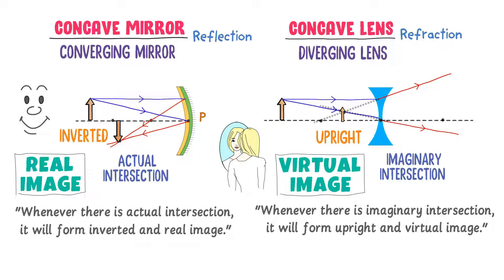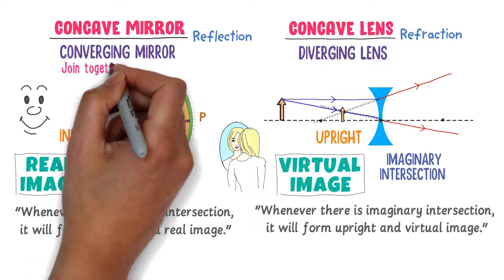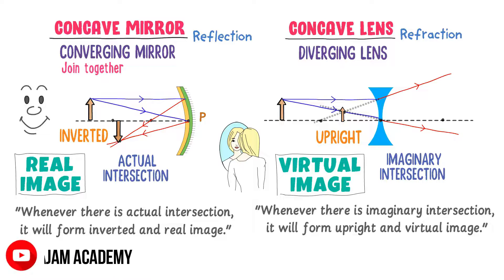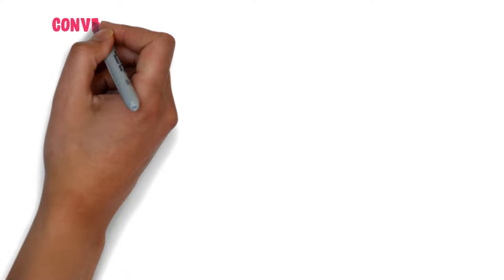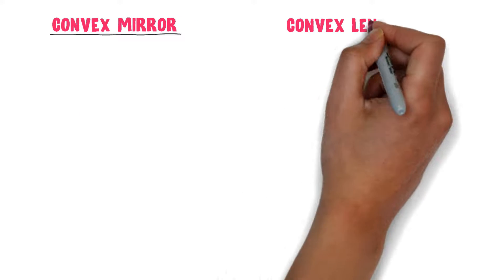Note that the word converge means come together or join together. Concave mirrors are converging mirrors that join together the reflected beam of light at one point and they form an inverted and real image. The word diverge means spread out in all directions. So concave lenses are diverging lenses that spread out the reflected beam of light in all directions to form an upright virtual image.